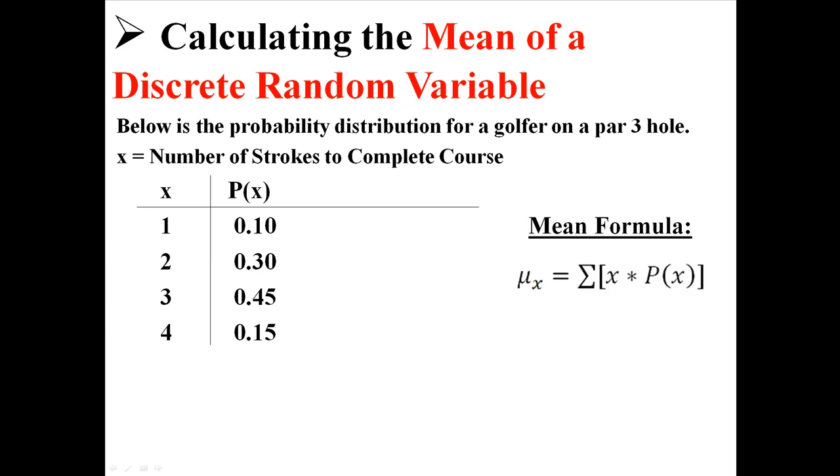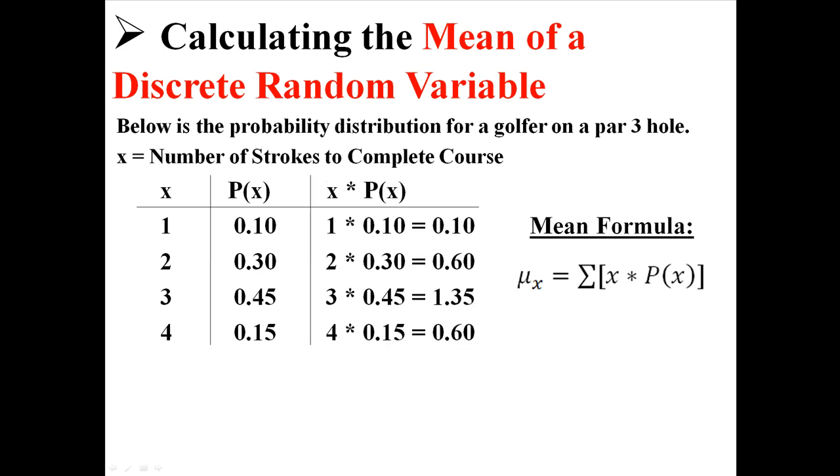So this is our sample distribution, and we have this formula here for calculating the mean. The mean for any x is the sum of all x times the probability associated with each x. So let me show you what that means. First we're going to find each x times the probability associated with each x.